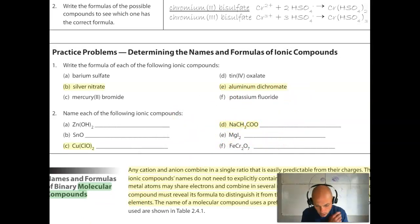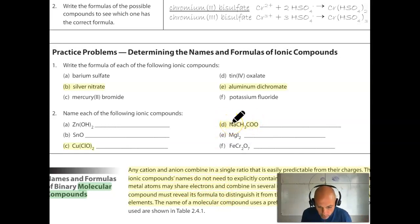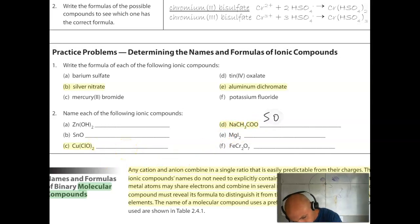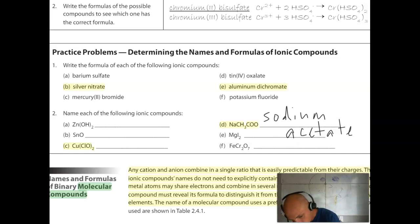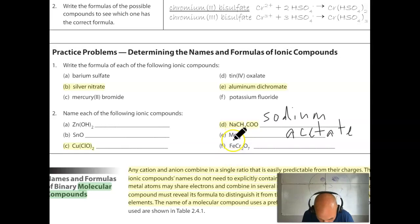For practice problem 2D: we know it's ionic because sodium is a metal. Na is sodium, and CH3COO− is found on the polyatomic ion sheet — it's called acetate. So this is sodium acetate. Because sodium is not a multivalent ion, no Roman numeral is needed. For 2E: Mg is magnesium and I− is iodide, so that compound is magnesium iodide.